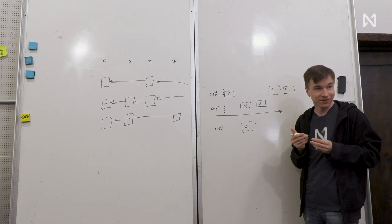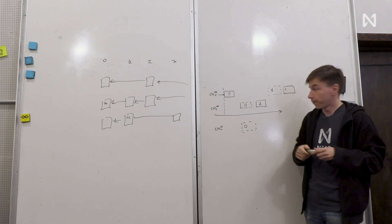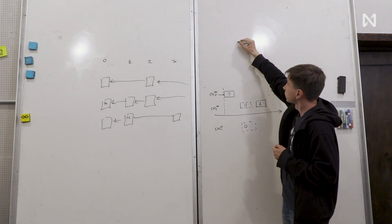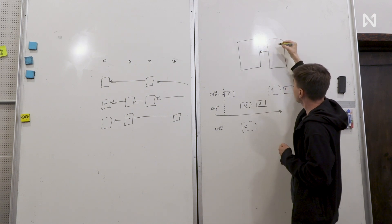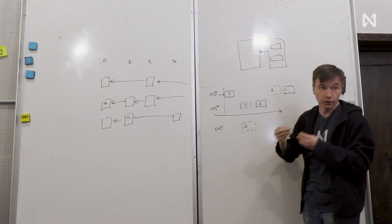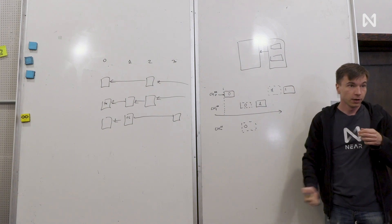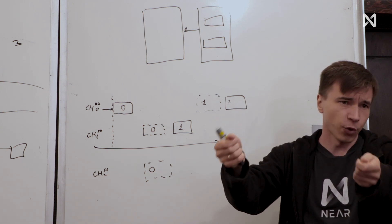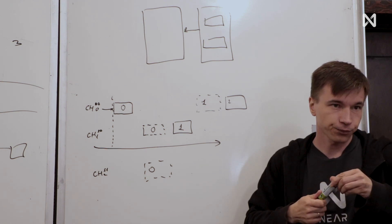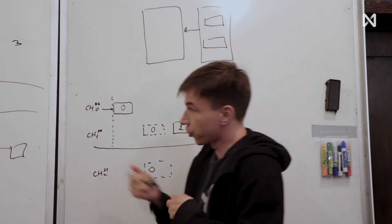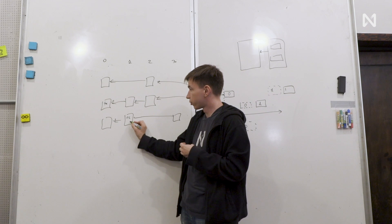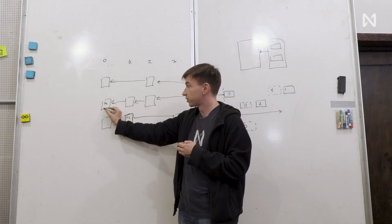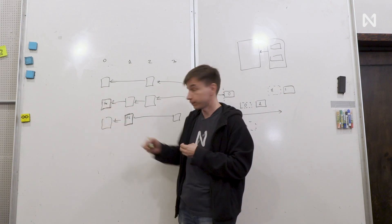They don't even know whether the chunk is relevant to them until the main chain block is produced. By the time they receive the main chain block, they know all the chunks which are included. Assuming heavy load, you'd expect most shards sending receipts to most other shards. But they still don't know what the receipts are. So the core problem is: whoever is going to produce the next chunk for shard one has no way of knowing the receipts as of applying the previous chunk at that point. There is no way to do that — that's the biggest problem.